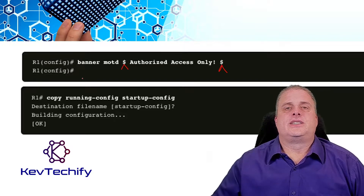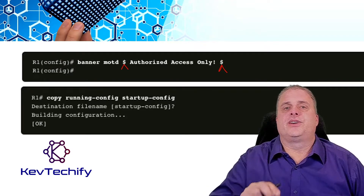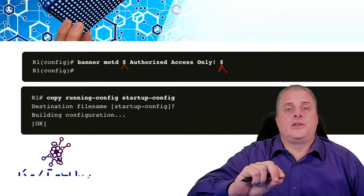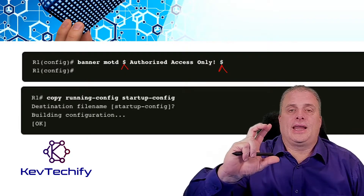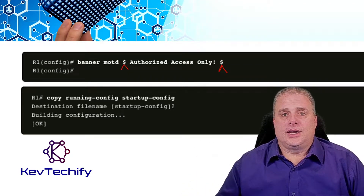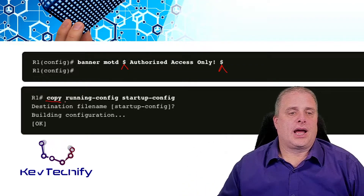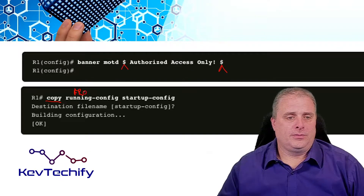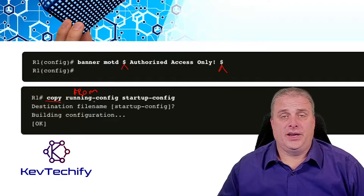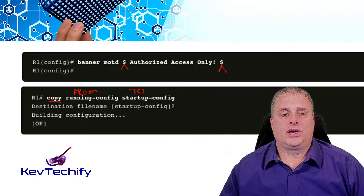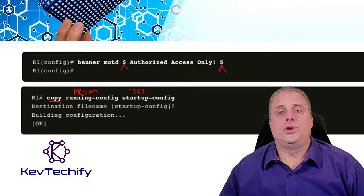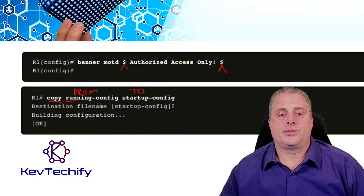Then we also have saving your configuration. You want to make sure you save your configurations in a production environment so that if the device reboots — whether it lost power or you did a reload — it has that configuration saved and loads it into memory. That is the copy command. We put the keyword copy, then where are we copying it from — here we're doing the running config, which is in RAM — and then where are we copying it to — we're copying it to the startup, which is a file in our flash. The full command is copy running-config startup-config, or you can trim it down to copy run start.